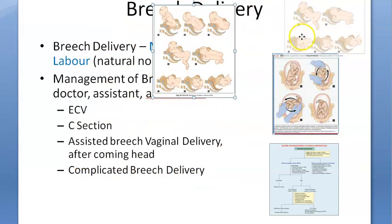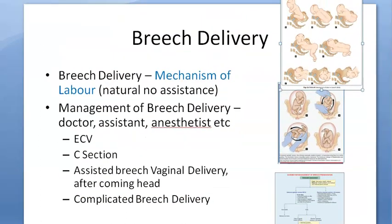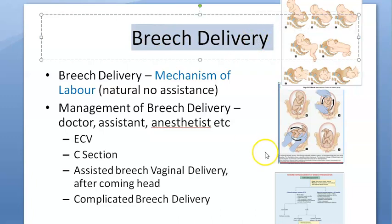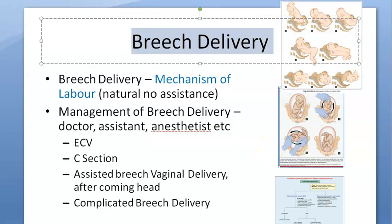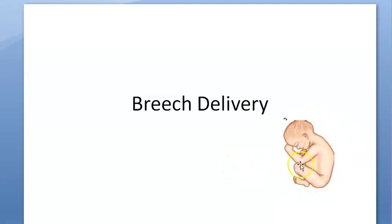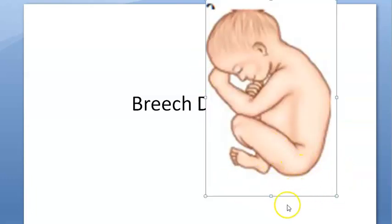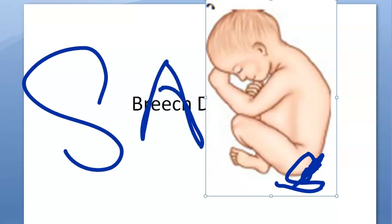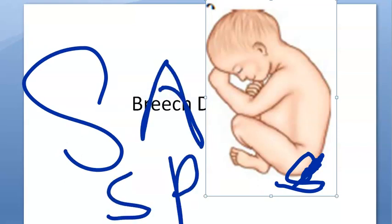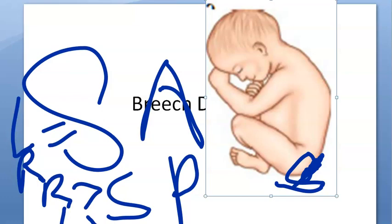Before that, we will look at the positions that the baby will be in during a breech delivery — what are the positions in relation to the maternal pelvis. In breech, the presenting part is the breech itself, and the sacrum is the denominator. The sacrum can be either anterior or posterior, and left or right — giving positions like left sacro-anterior.